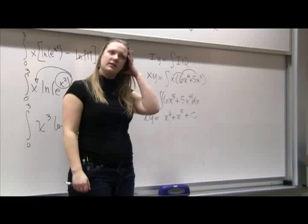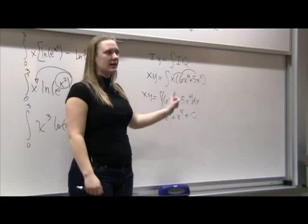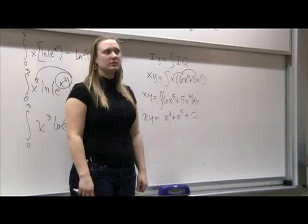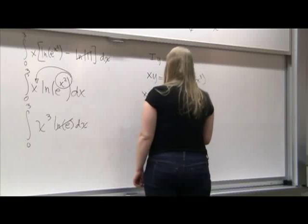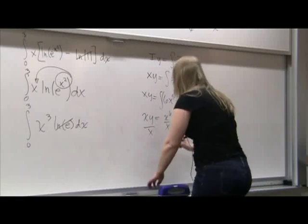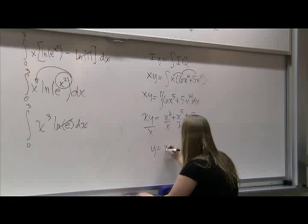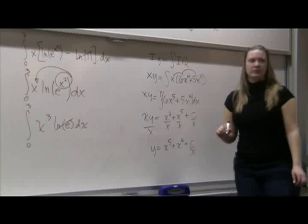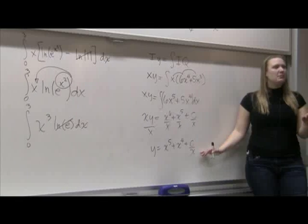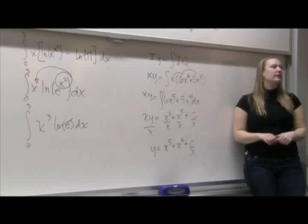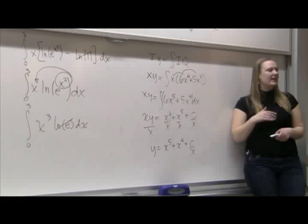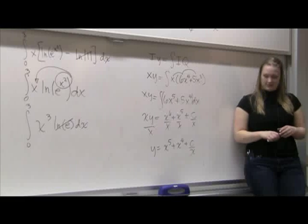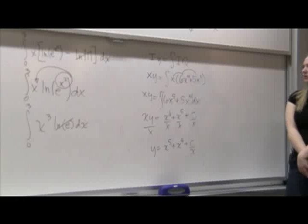So I'm going to divide by x. So that I get y equals x to the 5th plus x to the 4th plus c over x. Now, because this is a general solution, it will have the c in there, which will remind you to do the plus c. But if they give you initial conditions, the whole point of the initial conditions is to solve for the c, so the answer choices wouldn't have it in there. Does that make sense? Yes. Great.